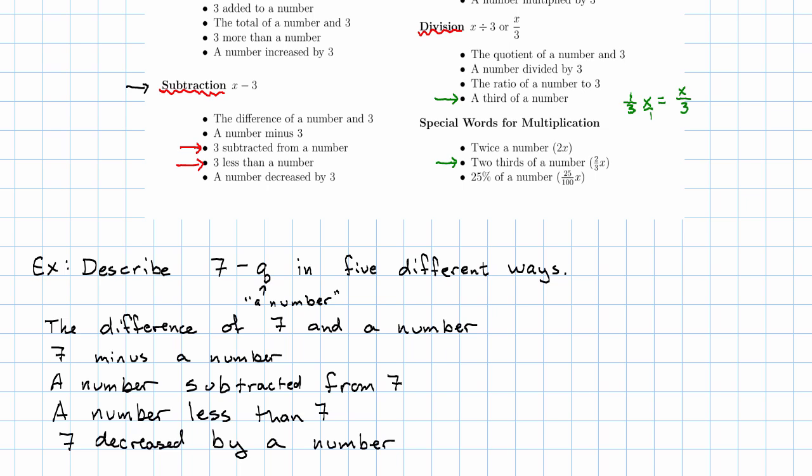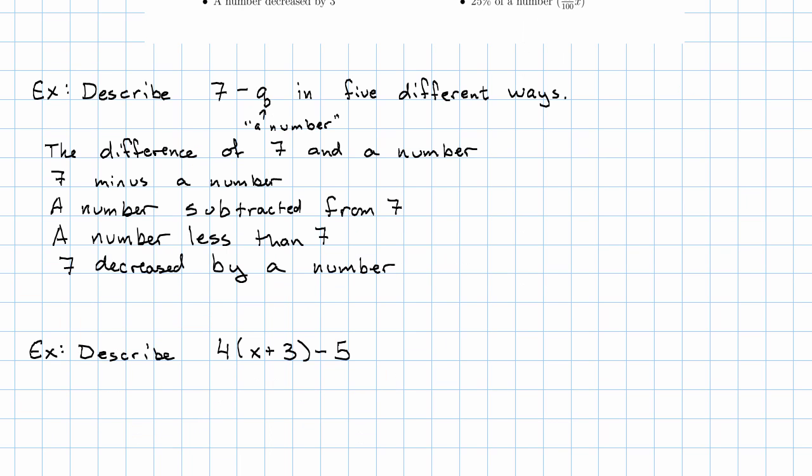How do we do this with a more complicated expression? I'm only going to give one description of this next example. Let's say we want to describe this complicated expression. We have four and then x plus three in parentheses and then minus five.